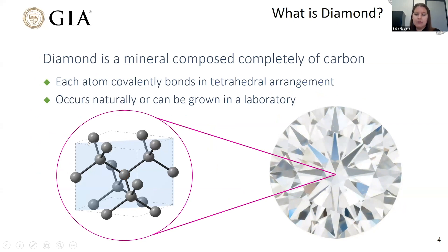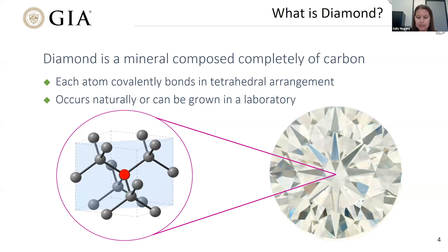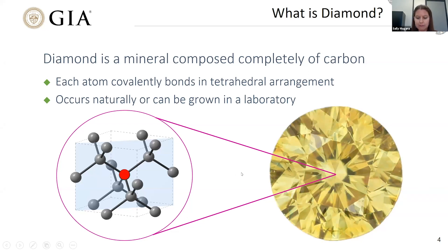What is diamond? It's a simple material — just carbon — and the atoms can be covalently bonded in a tetrahedral arrangement. It occurs naturally or can be grown in a laboratory. A perfect diamond in a perfect arrangement is colorless. However, some interesting things can happen when we start adding defects. For example, if we change one of those carbon atoms into nitrogen, depending on the defect and its concentration, the results can be quite beautiful.